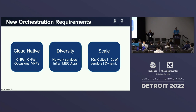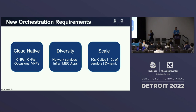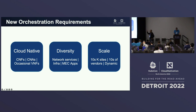What are the new requirements for orchestrators in private 5G? First, cloud native — everything is moving to cloud-native network functions and applications. Occasionally there are virtualized network functions, but Kubernetes can handle them through technologies like KubeVirt. Diversity is also key — you have network services, infrastructure, and edge computing applications all to manage. The biggest item is scale: tens of thousands of sites, dozens of vendors, and it's super dynamic. You'll be constantly updating, replicating, migrating, spinning up, and spinning down — that's what creates new challenges.